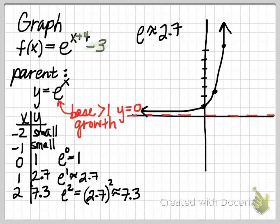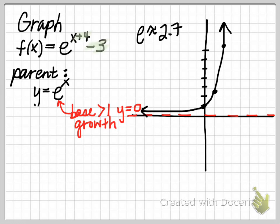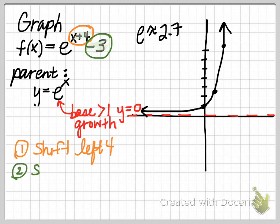Now we'll return to the function and take a look at the transformations that have occurred. So we have e raised to the x plus 4 power, so that is going to be a shift to the left 4. And then we have minus 3, and that is going to change our y values, so that is going to be a shift down 3.